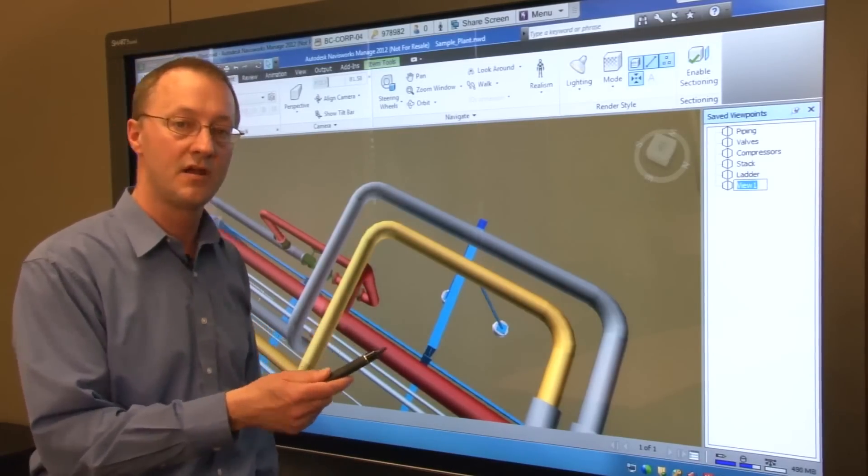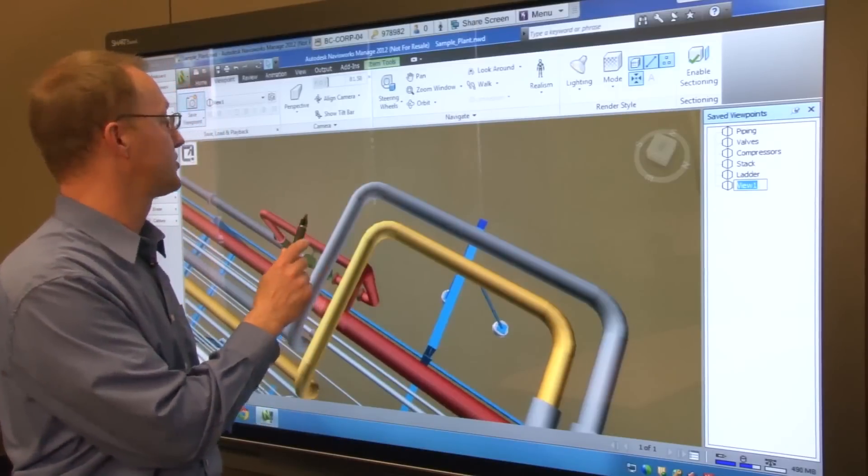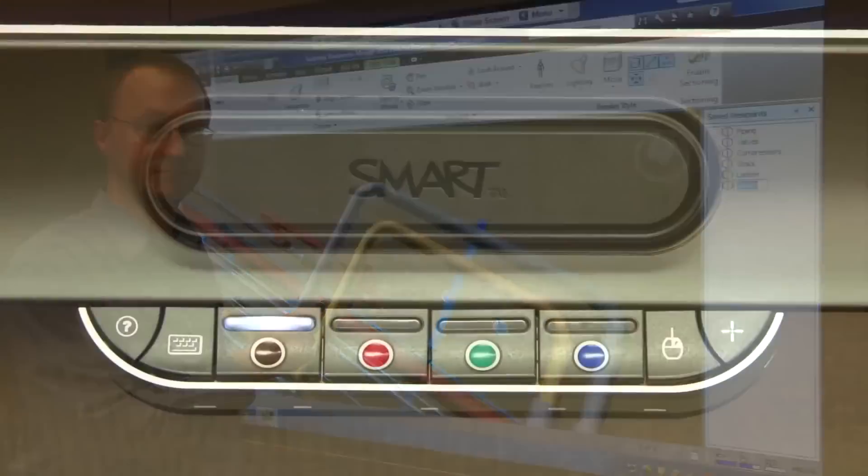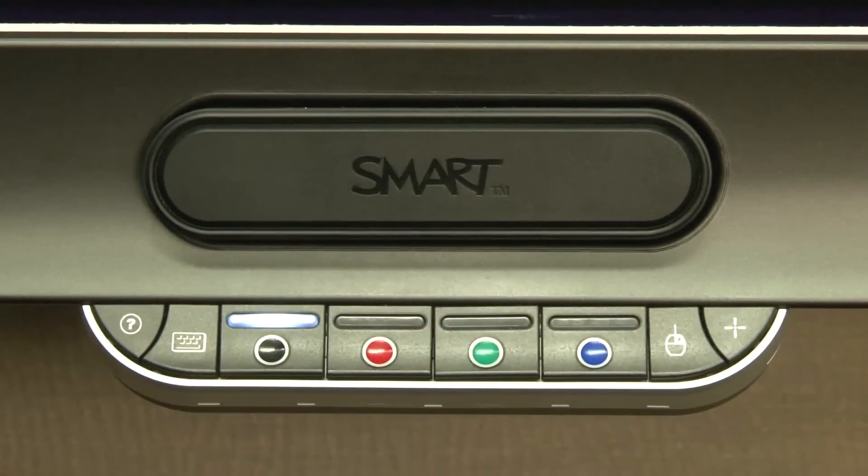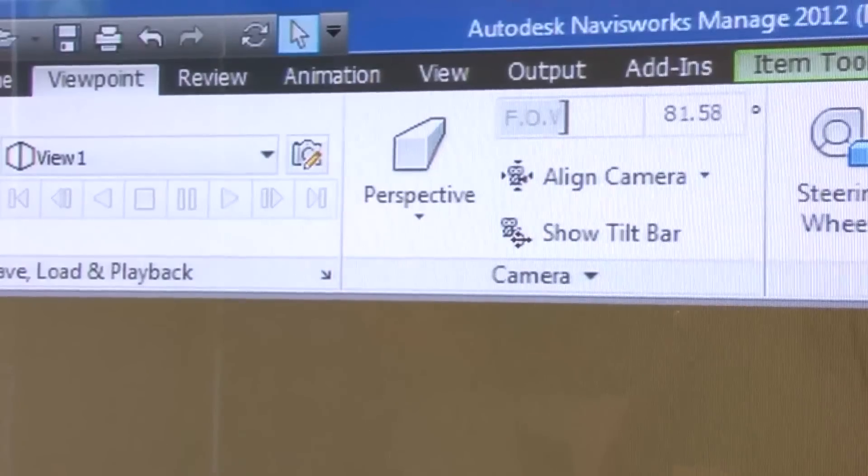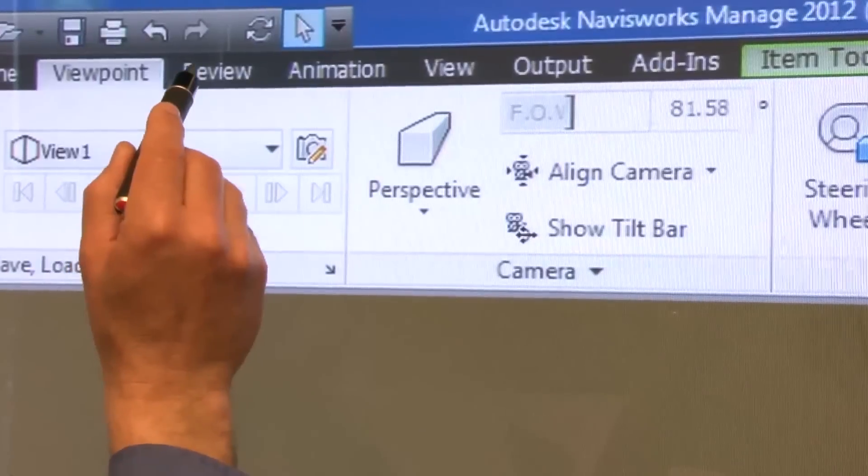Picking up the pen from the pen tray automatically sets Navisworks to the freehand annotation tool. You can select the color of your annotation by using the pen tray color buttons or you can select a color directly from the Navisworks palette.